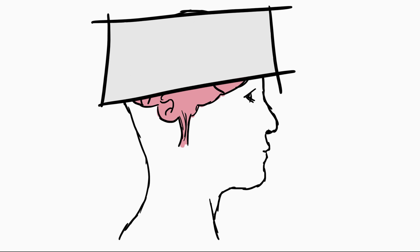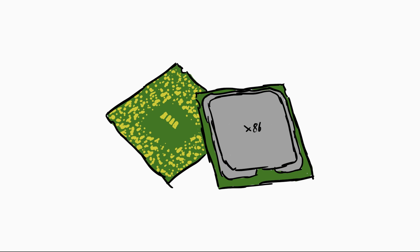Let's focus on programs like we have interacted with before — this means Intel architecture and Linux. Let's start at the beginning: we want programs to execute on our CPU. That's why a program contains machine code.